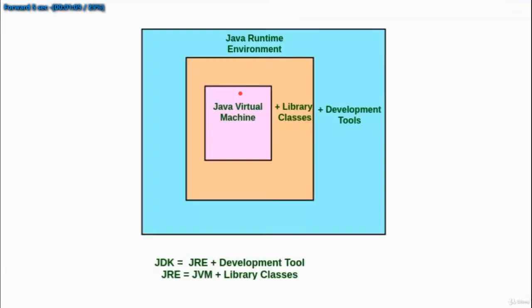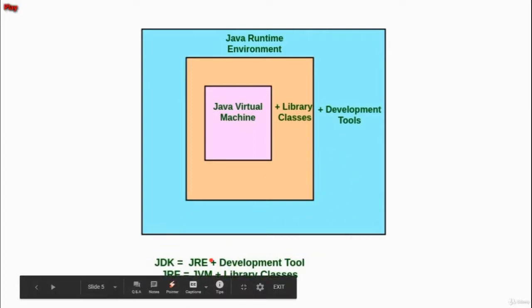First of all, what is JDK? The Java Development Kit is a software development environment which is used for developing Java applications and applets. It includes a Java Runtime Environment, an interpreter, a compiler, an archiver, a documentation generator, and other tools needed in Java development. So as you can see: JDK = JRE + development tools, and JRE = JVM + library classes.